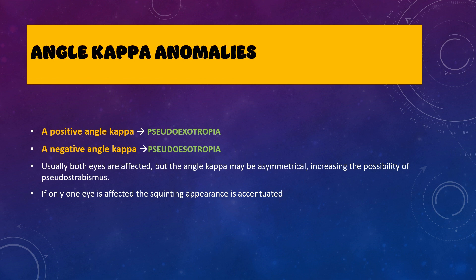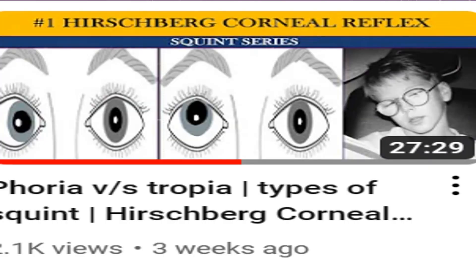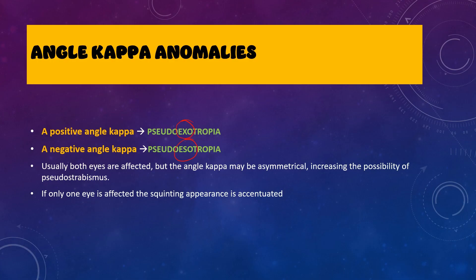Another commonly tested cause is angle kappa anomalies. Any anomalies in the angle kappa can lead to simulation of squint. A positive angle kappa causes pseudo-exotropia, and a negative angle kappa causes pseudo-esotropia — these are important high-yield points. When angle kappa is involved, it is usually affected symmetrically in both eyes, so it does not always lead to pseudo-strabismus. However, if angle kappa anomalies are present in one eye particularly, the squinting appearance is much more accentuated. A detailed video on angle kappa is available on the channel.